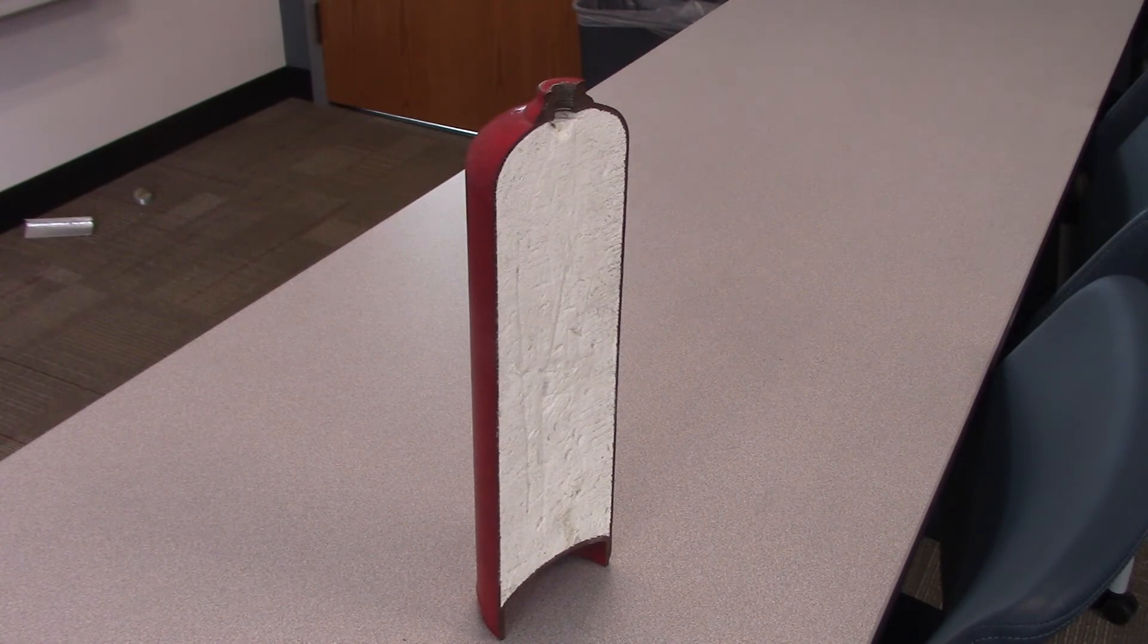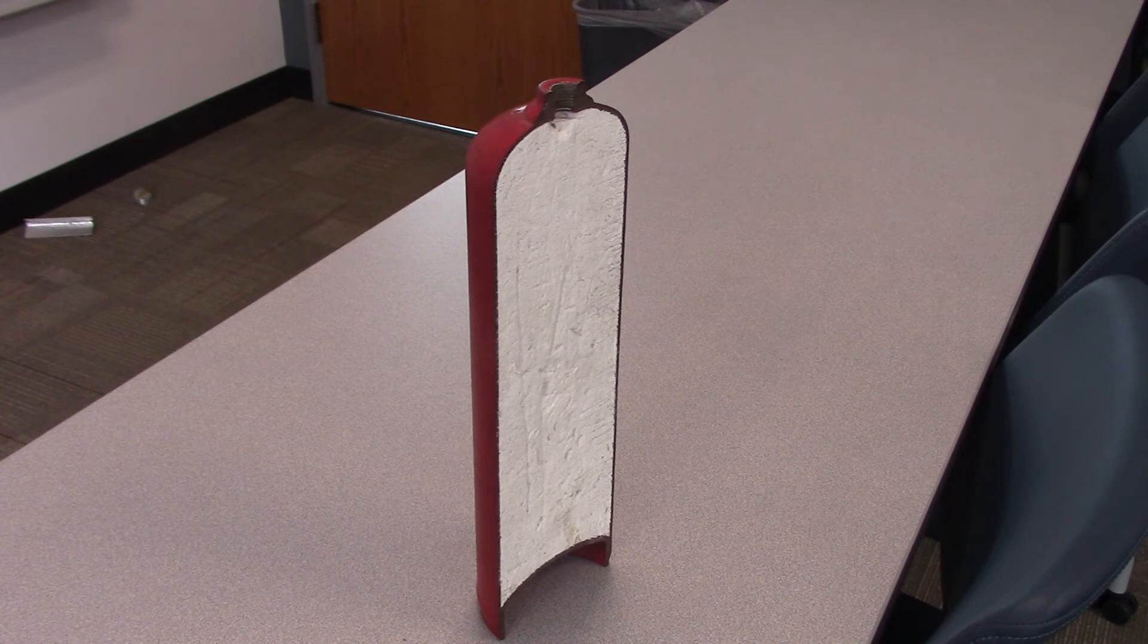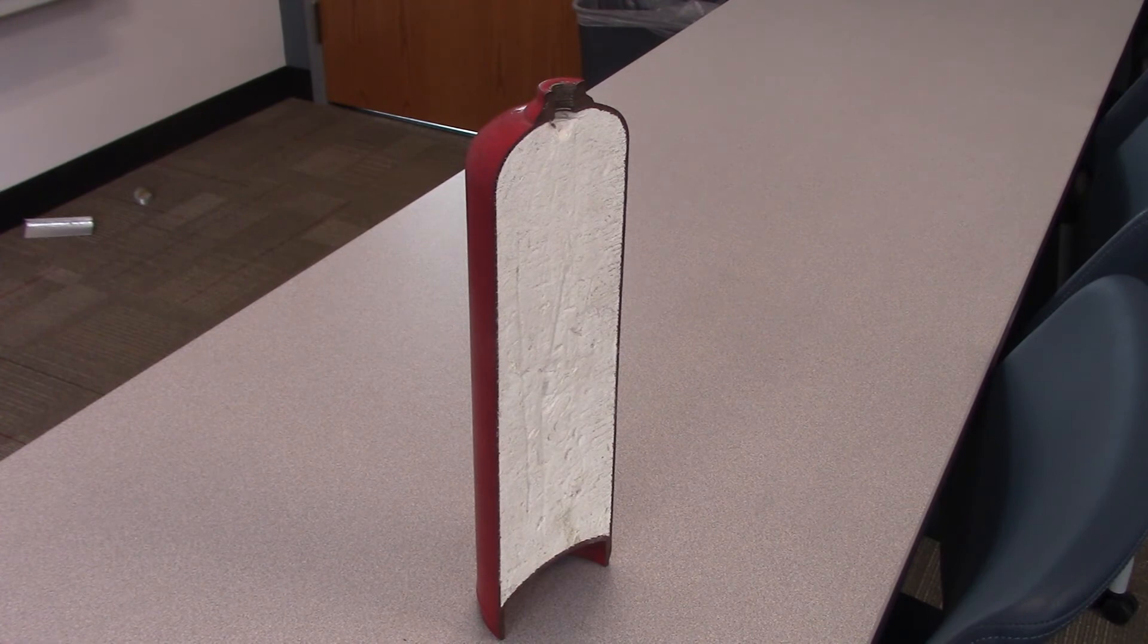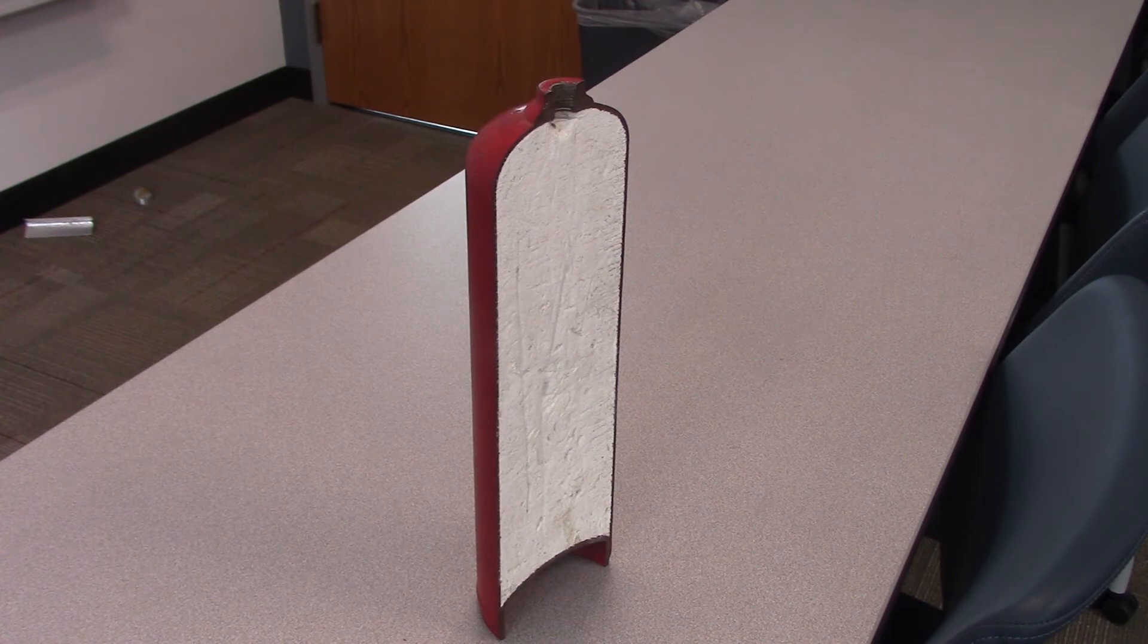So this is an acetylene bottle that was cut in half and you can see that's the spongy material that soaks up the acetone that's on the inside. So what we'll do now is we'll go look at the regulator on an acetylene bottle so you can see that 15 psi mark.